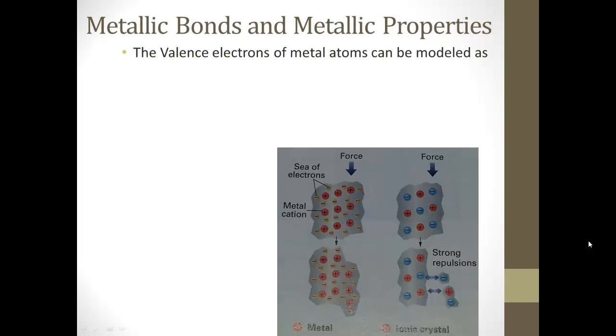The valence electrons, that outer shell of electrons of metal atoms, can be modeled as what's called a sea of mobile electrons.